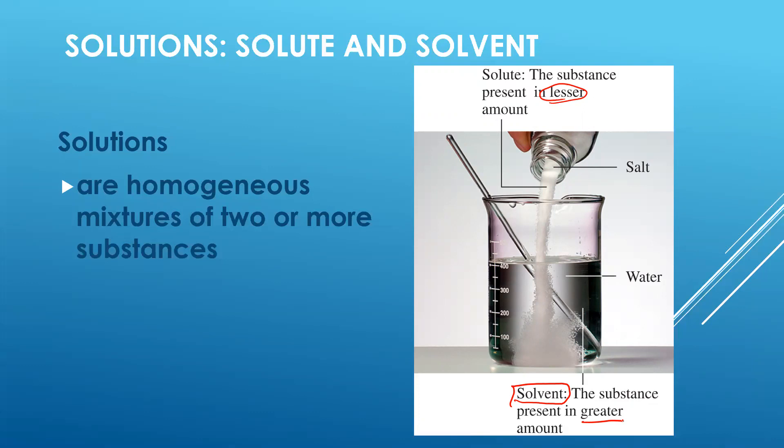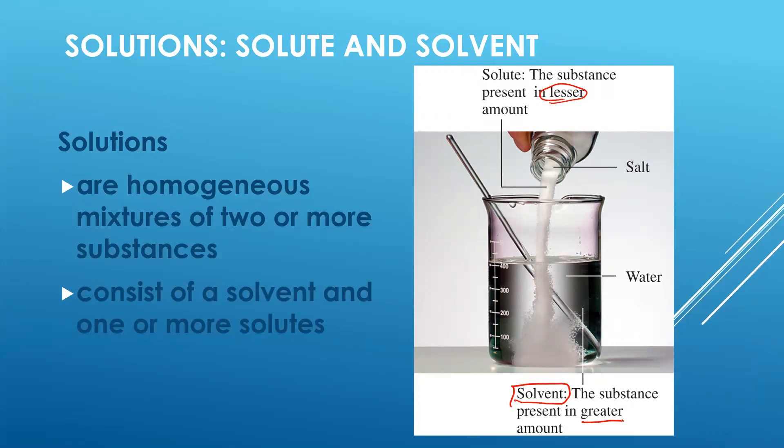Solutions, which have solute and solvent, are also homogeneous mixtures — meaning they're uniform throughout. Solutions can also consist of more than just one type of solute, as we'll see in the upcoming examples.